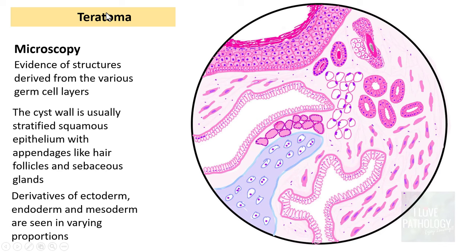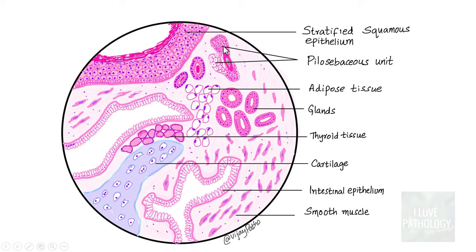Microscopically, you find evidence of structures derived from various germ cell layers — ectoderm, endoderm, and mesoderm — depending upon the components of the teratoma. The cyst wall in mature cystic teratoma is often stratified squamous epithelium with appendages like hair follicles and sebaceous glands. You can see a classical pilosebaceous unit. Mesoderm derivatives like adipose tissue and cartilage can be seen. Endoderm derivatives include glands, thyroid tissue, and intestinal epithelium, along with smooth muscle which is a mesoderm derivative.